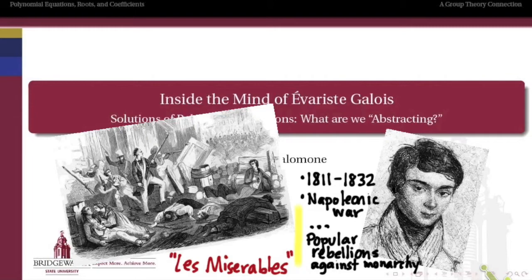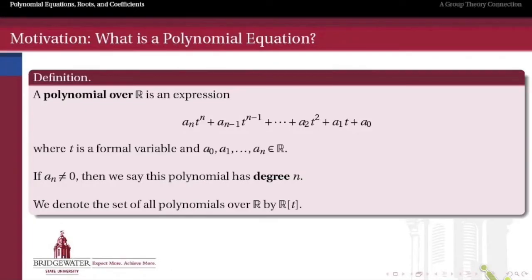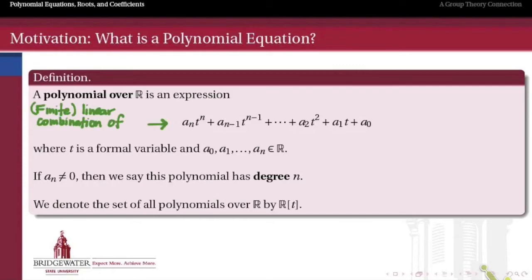So what is the process we're abstracting this semester? We want to think about solving equations — which is really bread and butter high school algebra. The particular kinds of equations we want to study are not those involving transcendental functions like logarithms, e to the x, or trigonometry. We want to be really basic: just equations built out of the fundamental operations of arithmetic with integers, rational numbers, or real numbers. Those kinds of equations are built out of polynomial expressions. A polynomial over the real numbers is a finite linear combination of powers of a variable t — a sum of powers of t with real number coefficients.